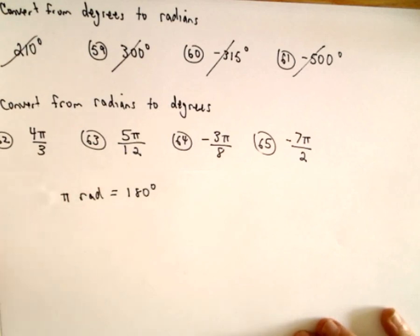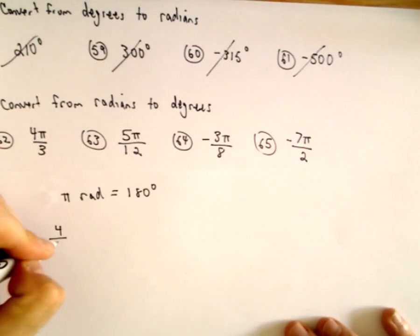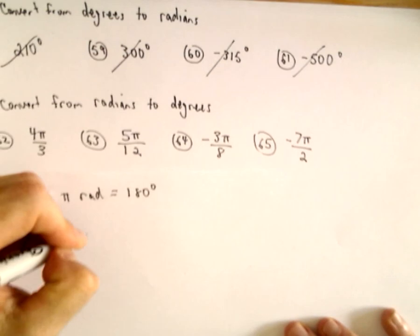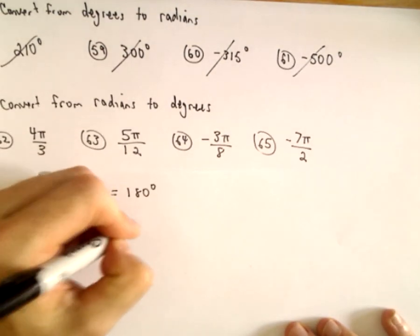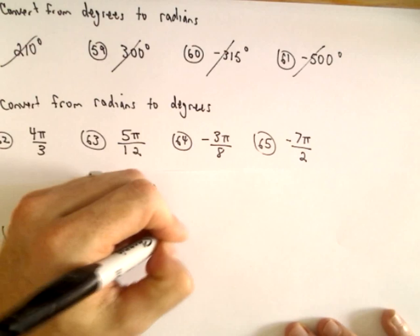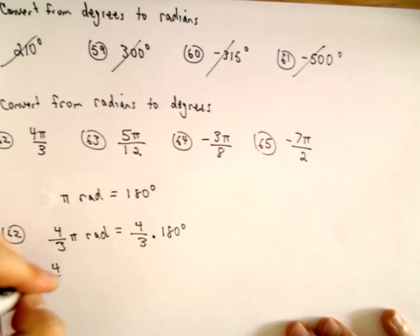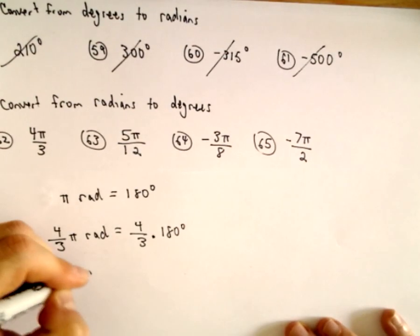So all I'm going to do is basically multiply. For example, in 62 I want 4 over 3 pi radians, so I'm going to multiply both sides by 4 thirds. So it says 4 thirds pi radians.